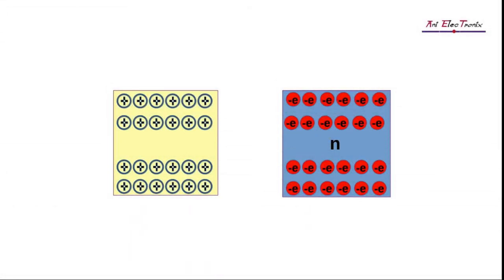A n-type semiconductor has a majority carrier electron and a minority carrier hole. N stands for negative here. A p-type semiconductor has a majority carrier hole and a minority carrier electron. P stands for positive here.